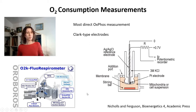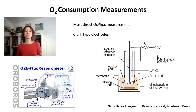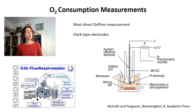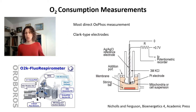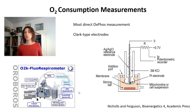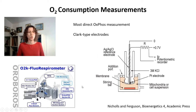Seahorse bioanalyzers are excellent for measuring oxygen consumption in intact cells, and you can also use them for isolated mitochondria or permeabilized cells. However, they're not the easiest or cheapest system for isolated mitochondria — that would be Clark-type electrodes such as Oroboros. Oroboros is very flexible: you can put isolated mitochondria, permeabilized cells, whole small organisms like C. elegans, or pieces of tissue in the chamber. You can measure both oxygen consumption and oxygen production, for example to measure catalase activity. Their wiki page also has a lot of information on how to do experiments.